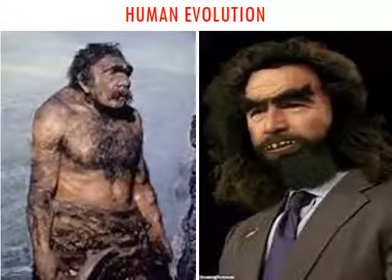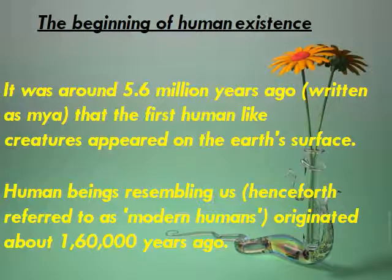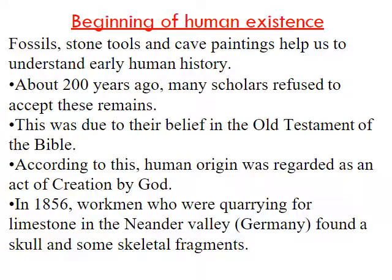The sequence of human evolution can be worked out from the area where fossils are found. The beginning of human existence was around 5.6 million years ago — written as mya — when the first human-like creature appeared on the earth's surface. Human beings resembling us, henceforth referred to as modern humans, originated about 160,000 years ago. Fossil stone tools and cave paintings help us understand early human history.